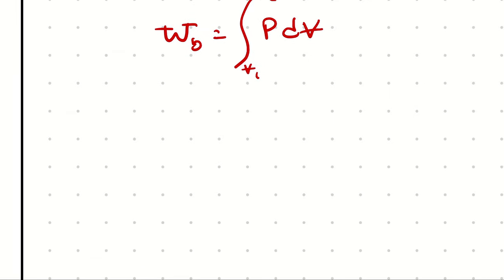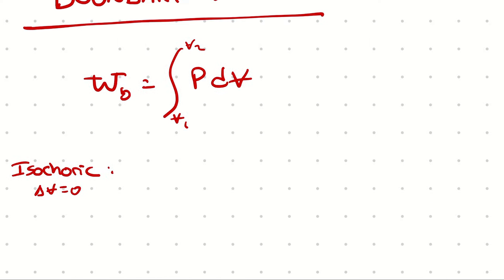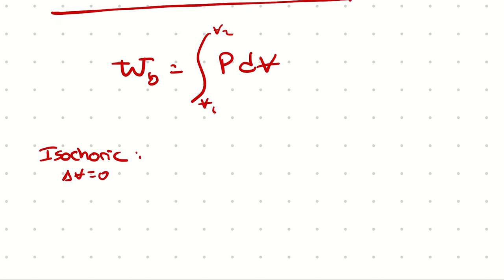For simplification number one, let's consider an isochoric process. In an isochoric process, that's one where the volume doesn't change. How does the integral of pressure with respect to volume behave? Well, if there is no change in volume, there is no boundary work. If dV is zero, then work is zero — it doesn't matter what the pressure is. Boundary work is zero.